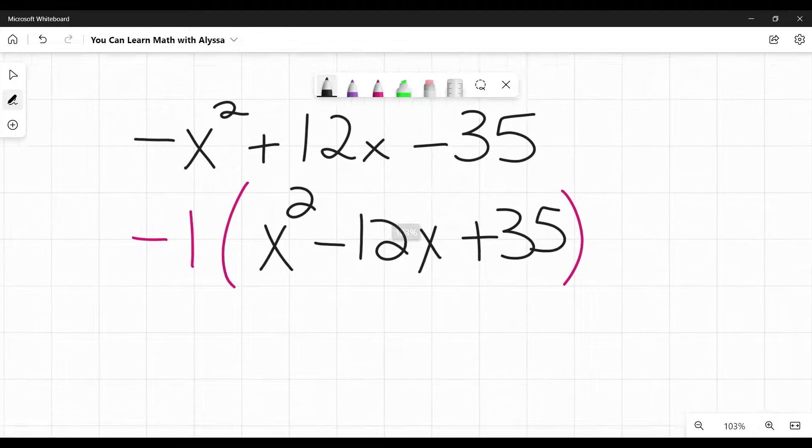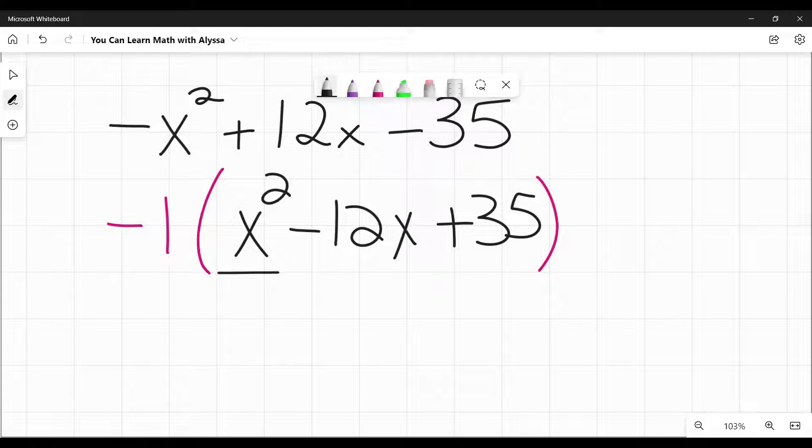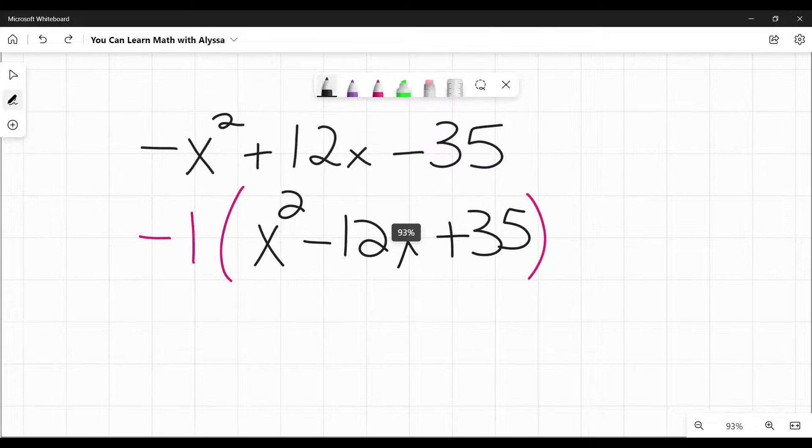From that point, you factor just like you have previously when you have a plain coefficient of one or just a positive x squared, same difference, as your first term.